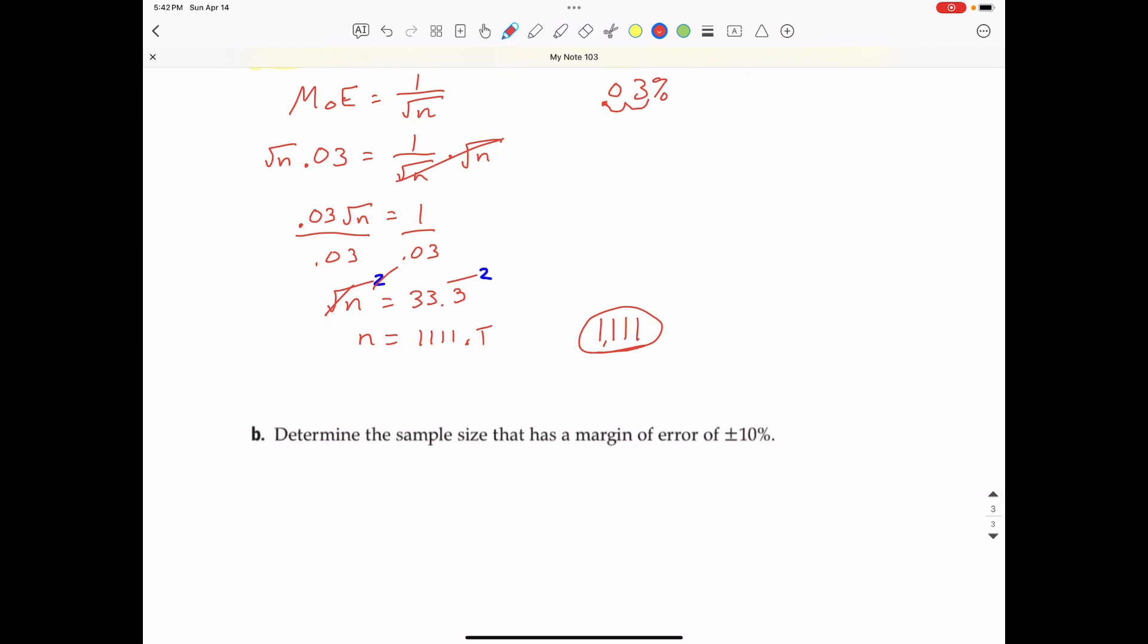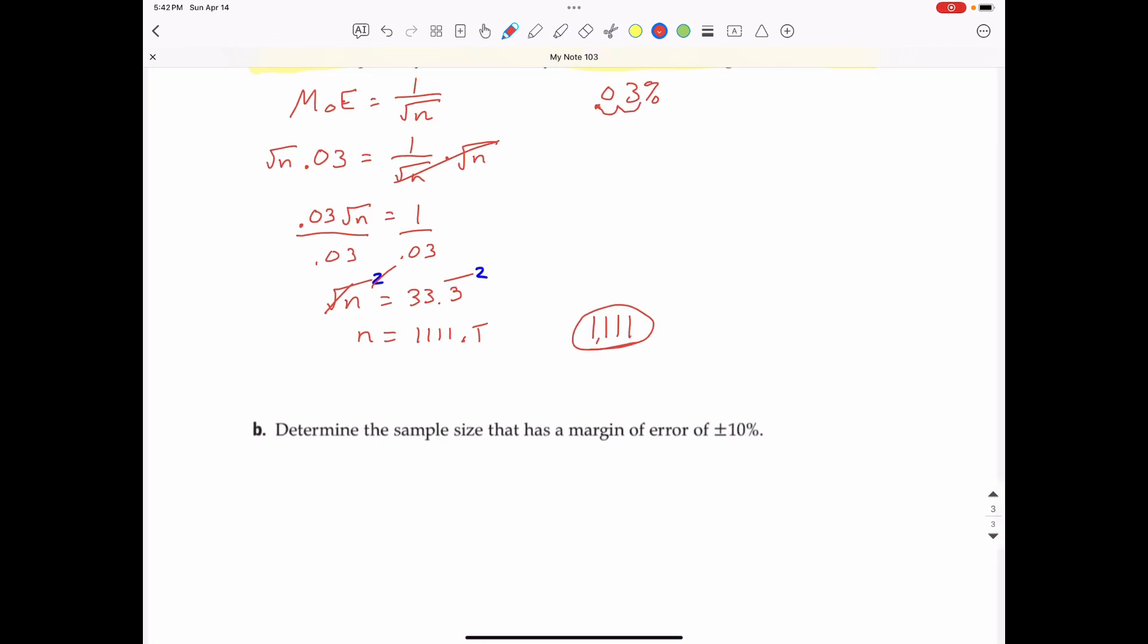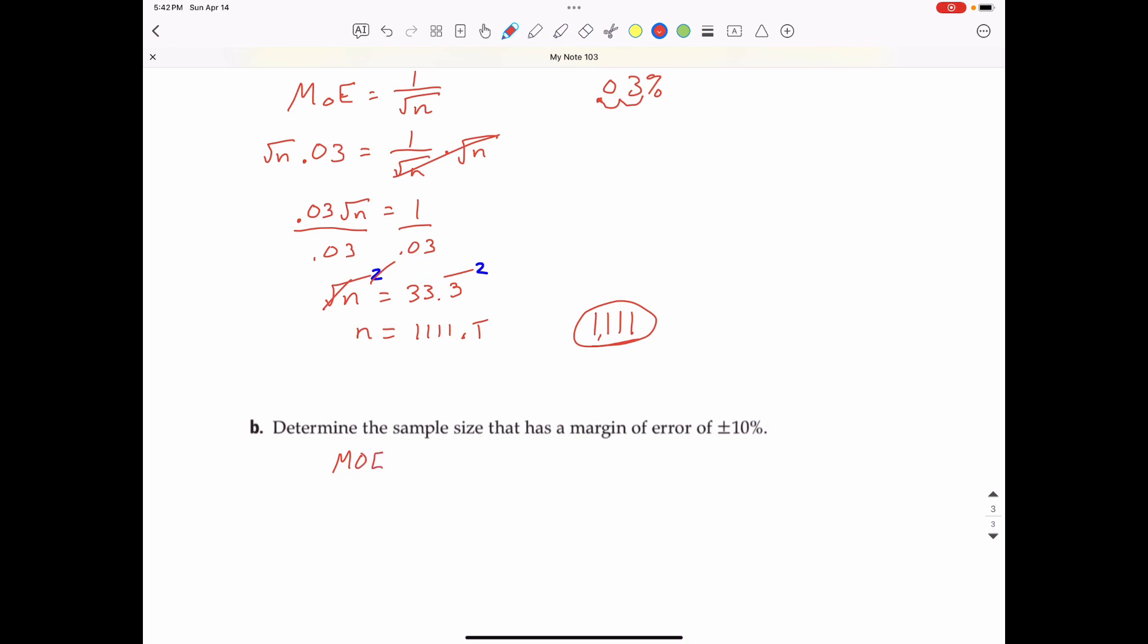Part B, determine the sample size that has a margin of error of plus or minus 10 percent. Before you view this, you should try to do this one on your own by using the last example as a guide. So the margin of error would be equal to 1 over the square root of n. We're looking for a margin of error of 10 percent. So that is 0.1 as a decimal. So 0.1 equals 1 over the square root of n.